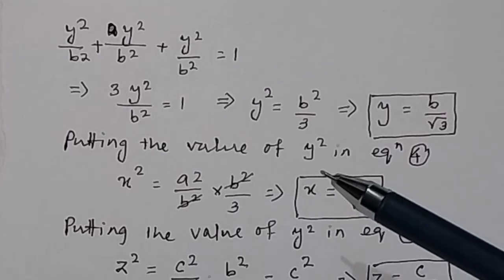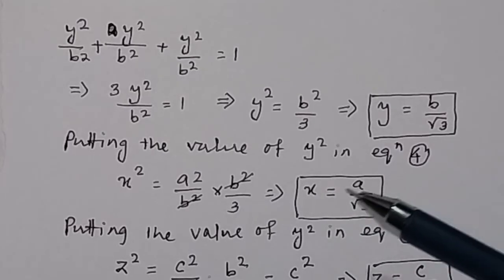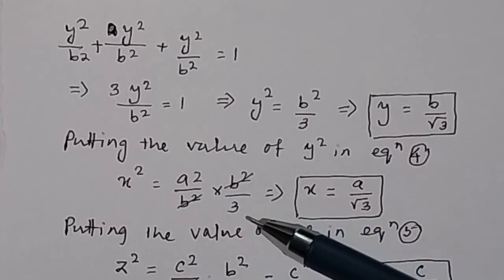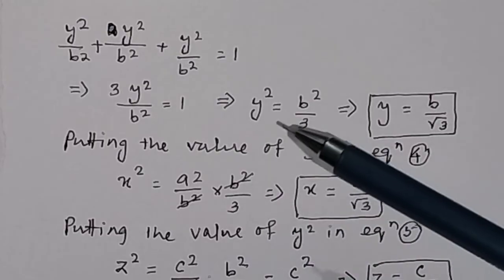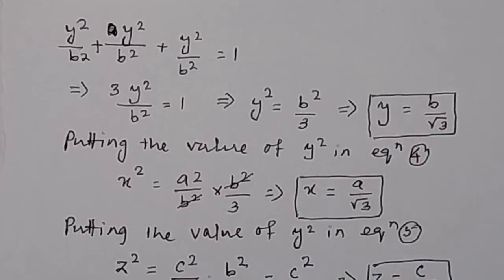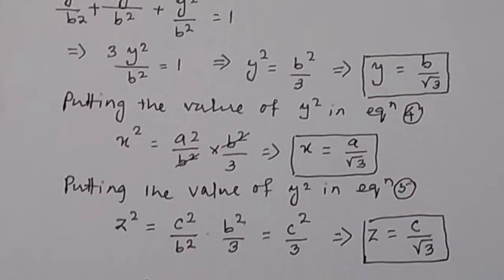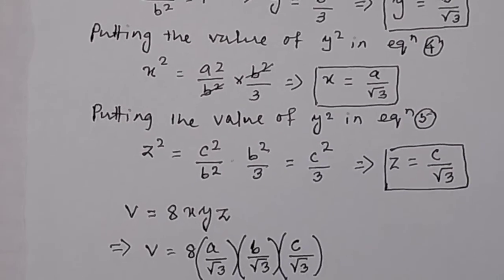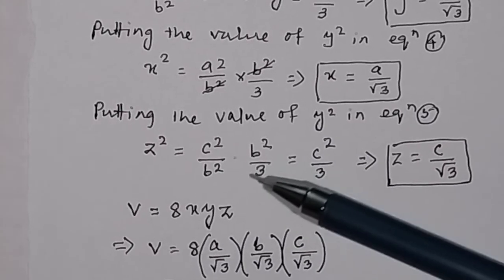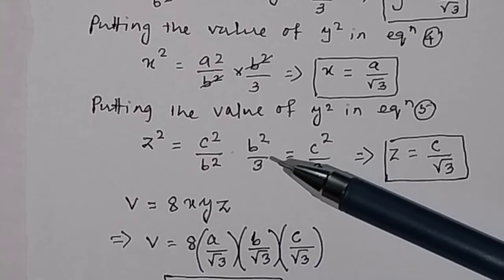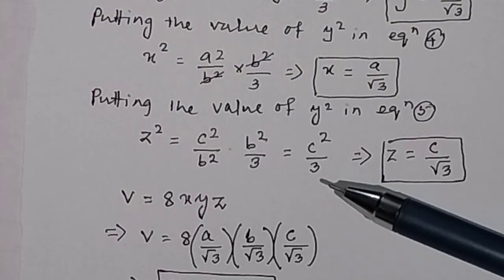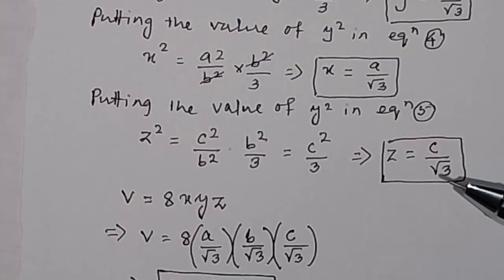Similarly, putting the value of y² = b²/3 into equation 4, we get x² = (a²/b²) × (b²/3) = a²/3, so x = a/√3. And putting y² = b²/3 into equation 5, we get z² = (c²/b²) × (b²/3) = c²/3, so z = c/√3.